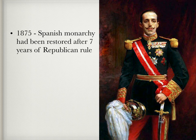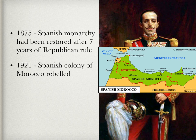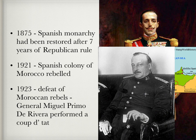In 1875, the Spanish monarchy had been restored after seven years of Republican rule. In 1921, the Spanish colony of Morocco rebelled, killing about 7,000 Spanish soldiers, which led to a domestic crisis. King Alfonso XIII abdicated in 1931, leaving behind a Spain with only one colony, a weak army, and no real economic growth.